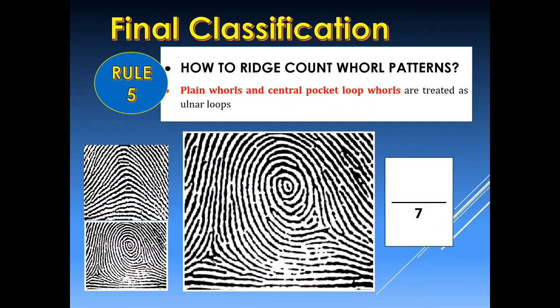If our central pocket loop whorl is present on block 10, we treat it again as an ulnar loop, so the delta will be at the right side of the fingerprint pattern. We connect the delta and the core and count the intervening ridges. In this example we have 7 intervening ridges, which will serve as our final classification.